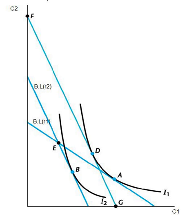Intertemporal choice is the process by which people make decisions about what and how much to do at various points in time, when choices at one time influence the possibilities available at other points in time.